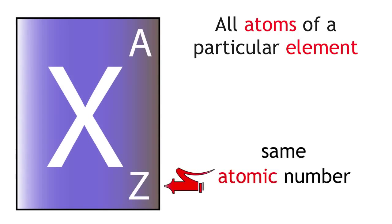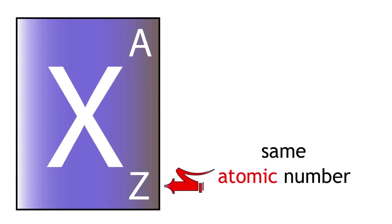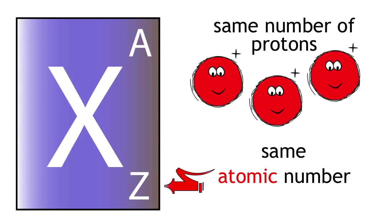All atoms of a particular element have the same atomic number. This means that they all have the same number of protons.